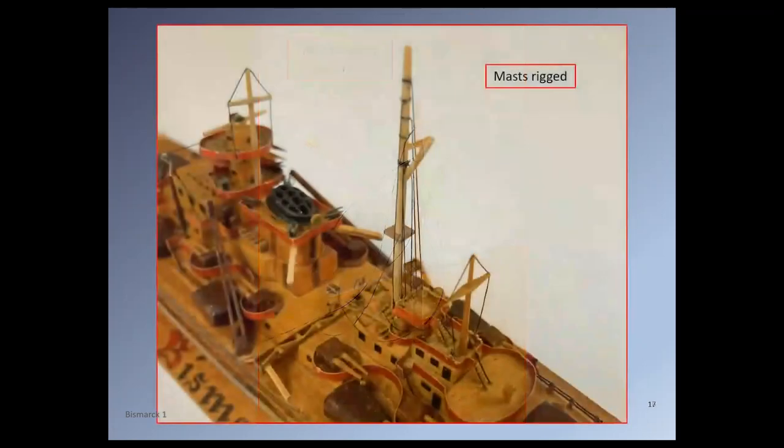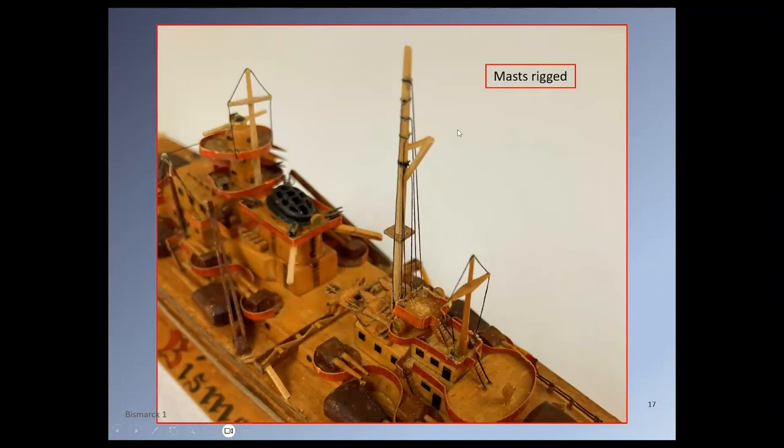Here's the mainmast replacement showing the rigging made from fly-tying silk. And then, having rigged it, there we are in position with the rigging belayed down to the bulwark on that platform down here. There's the mizzen mast with its own fly-tying silk, and there's the foremast at that point there.